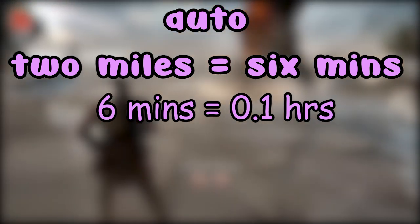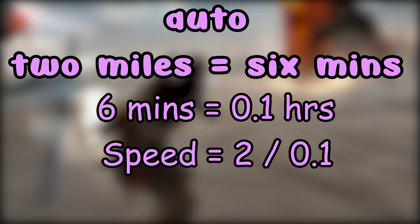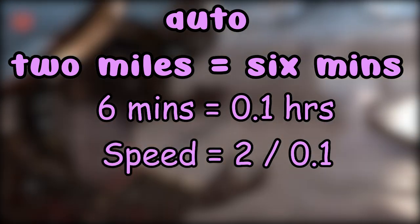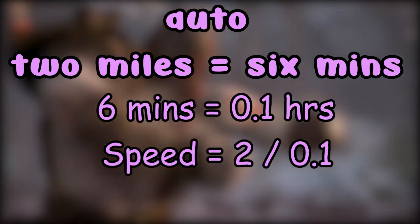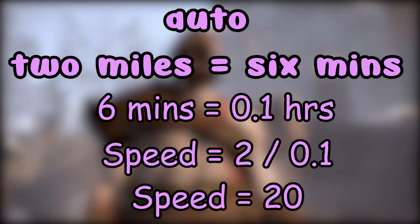Now, we will substitute the two values: 2 divided by 0.1. The answer is 20 miles per hour. It is simple.